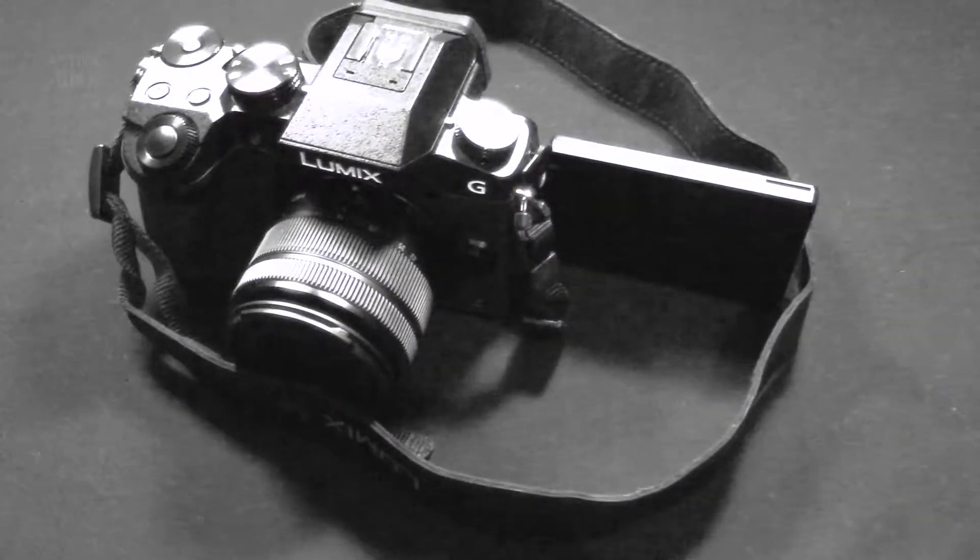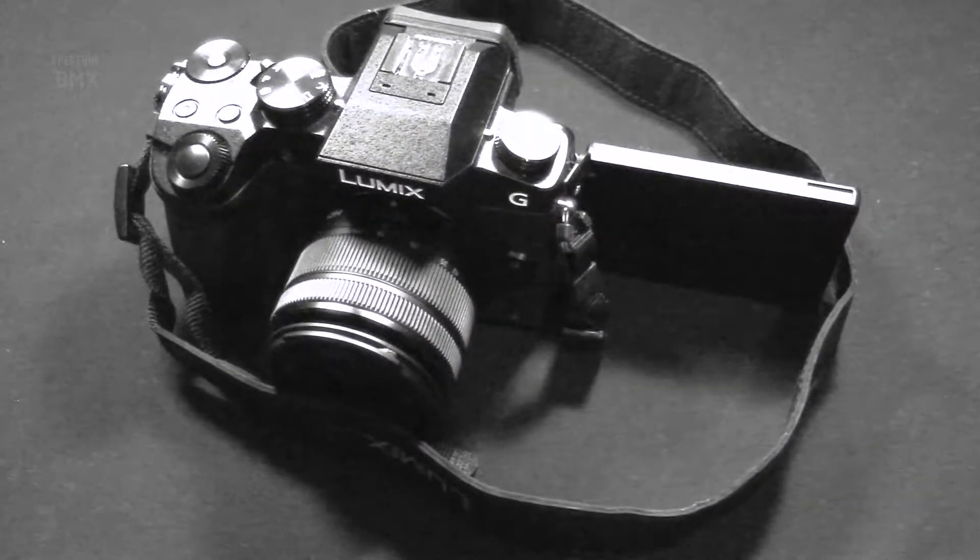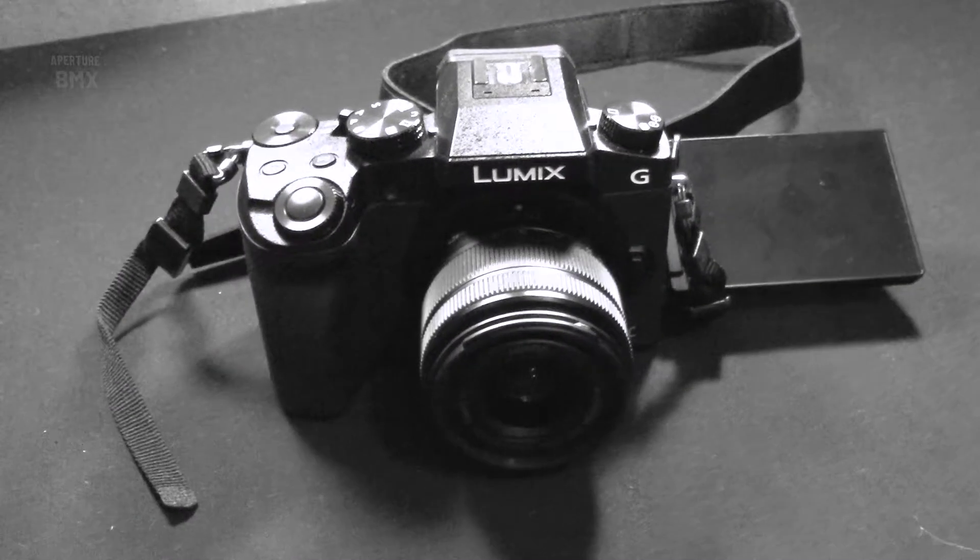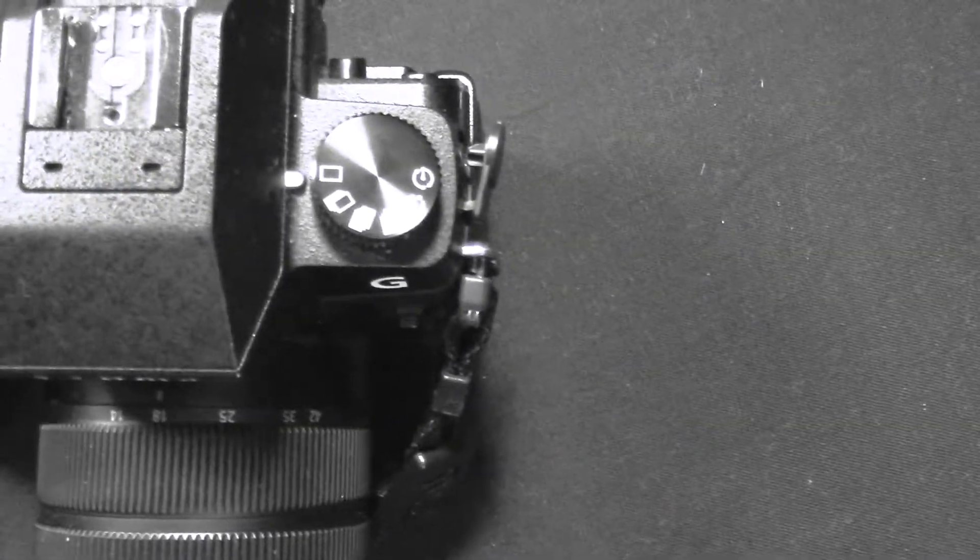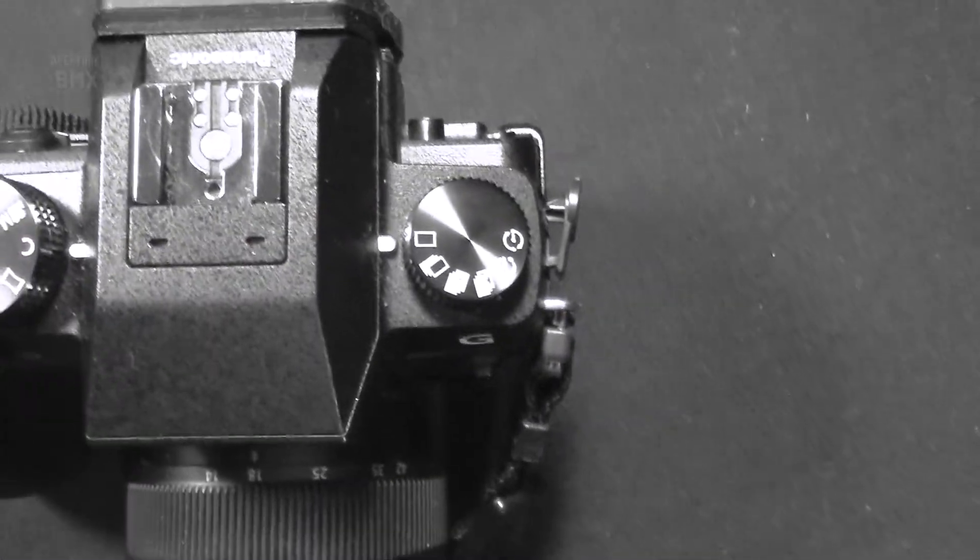This camera does shoot 4K. I don't shoot in 4K though—I shoot in 1080p, 50 frames a second. BMX is a fast sport, so shooting in higher frame rate is a good thing, and it lets you slow down the footage to get nice slow motion.